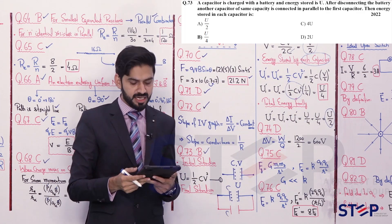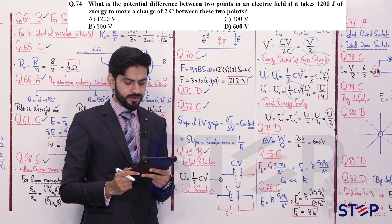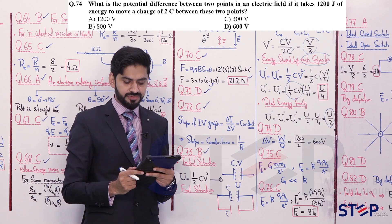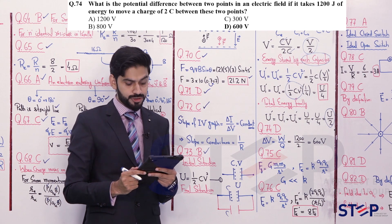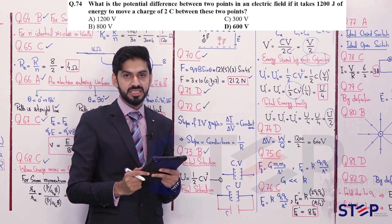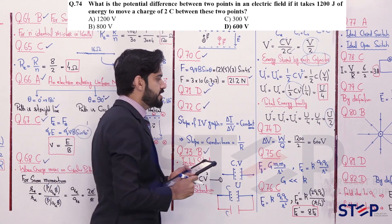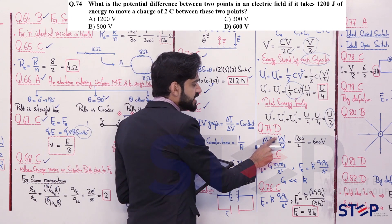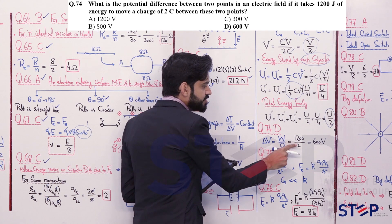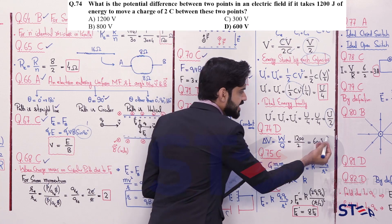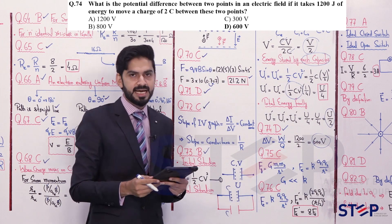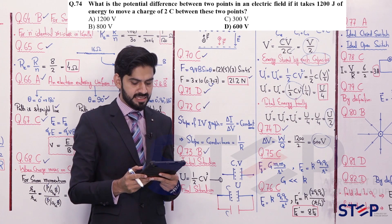Question 74: What is the potential difference between two points if it takes 1200 joules of energy to move a charge of 2 coulombs between them? By definition, potential difference = energy / charge = 1200 / 2 = 600 volts. Answer is option D.